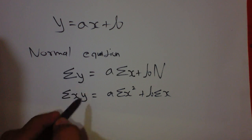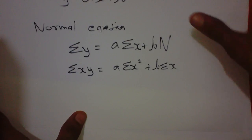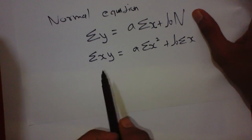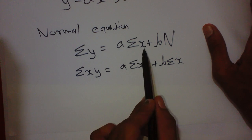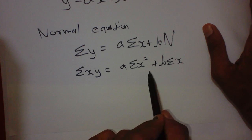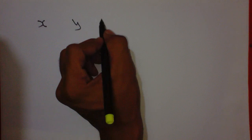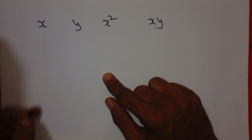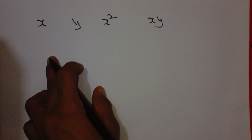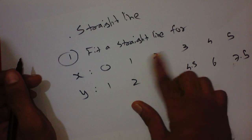To put values into these normal equations, we need to create a table to calculate the summations. The table will have columns for x, y, x², and xy, and the totals will give us summation of x, summation of y, summation of x², and summation of xy.